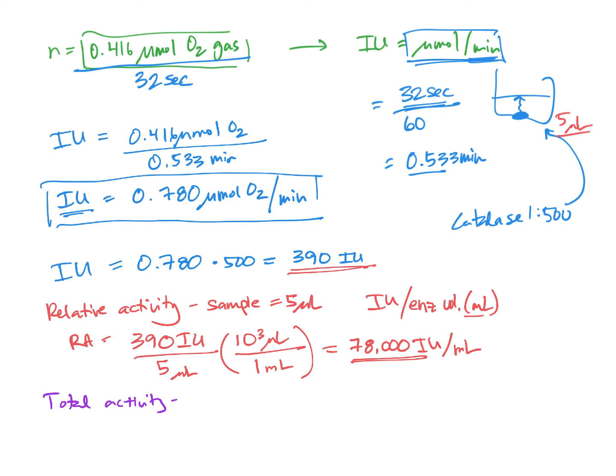This is something we would care about when we're thinking industrial scale enzyme production. If I use the enzyme activity from the entire source, how much enzyme activity would I have? So in order to calculate total activity, we take the relative activity multiplied by the volume of our total enzyme extract. In the example we're talking about here, we have 12 mils of enzyme extract.